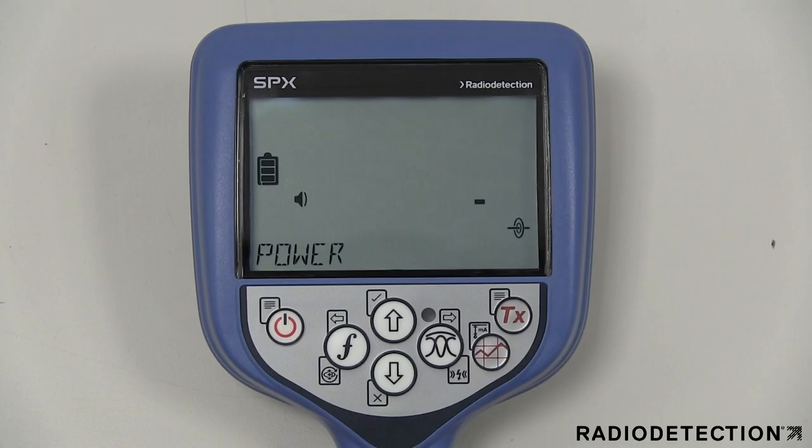The power menu option allows you to select the correct local power network frequency, 50 Hz or 60 Hz.